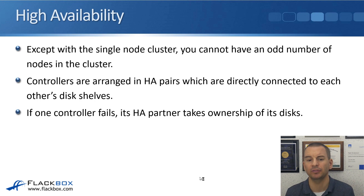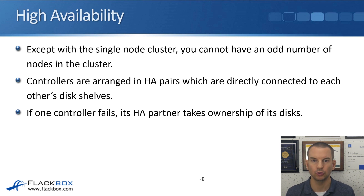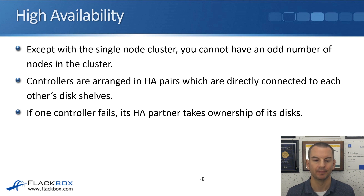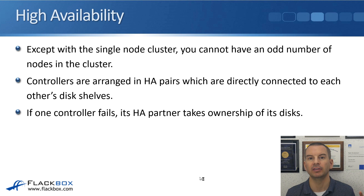Except with the single-node cluster, you cannot have an odd number of nodes in the cluster — it's always going to be one, two, four, six, or eight, etc. The controllers are always arranged in HA pairs, which are directly connected to each other's disk shelves with SAS cables. If one controller fails, its HA partner takes ownership of its disks so that the data is still accessible.